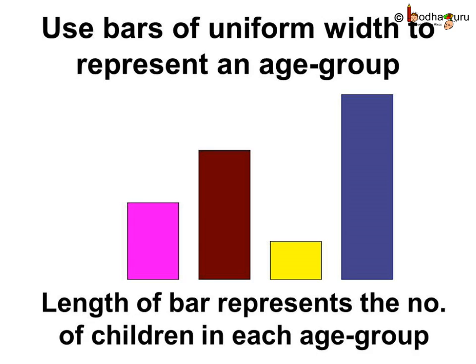Let's use the bar chart to represent this data. We shall use bars of uniform width to represent an age group with equal spacing between them, and the length of each bar shall represent the number of children in each age group.